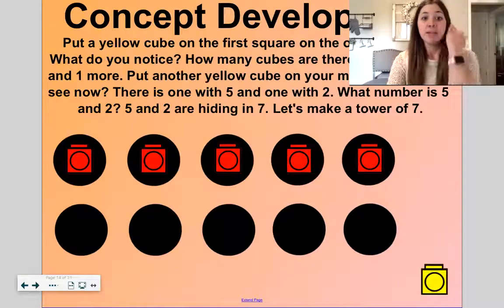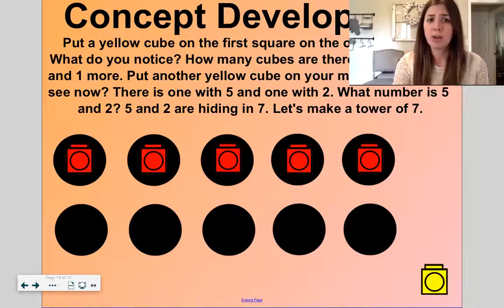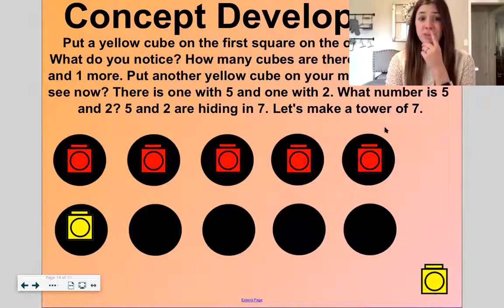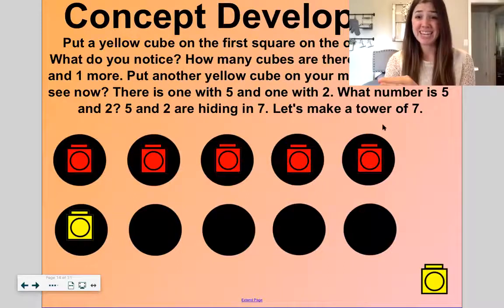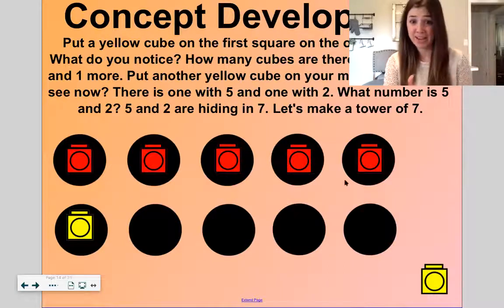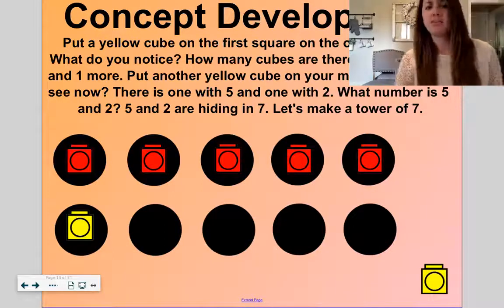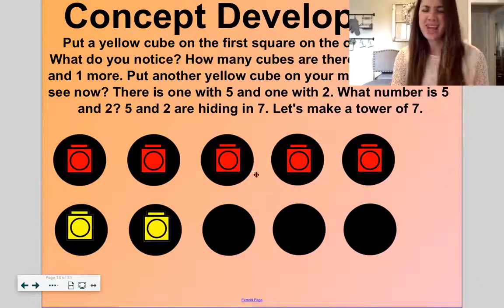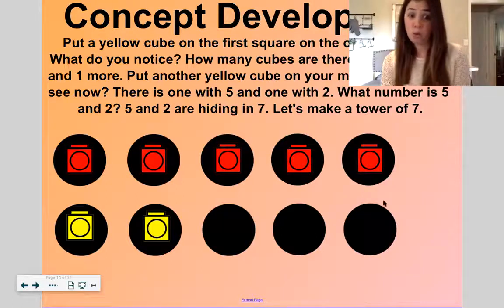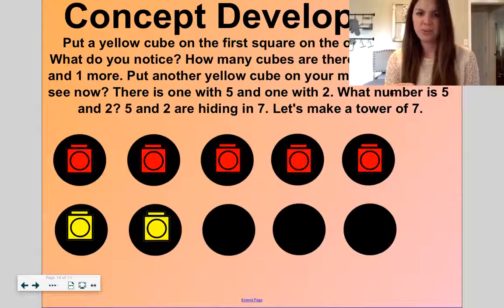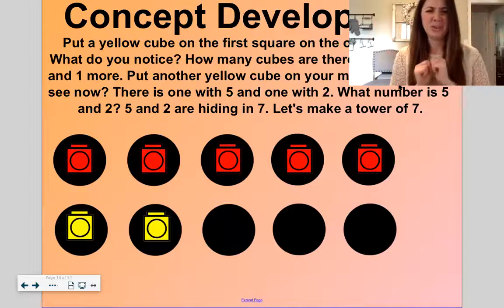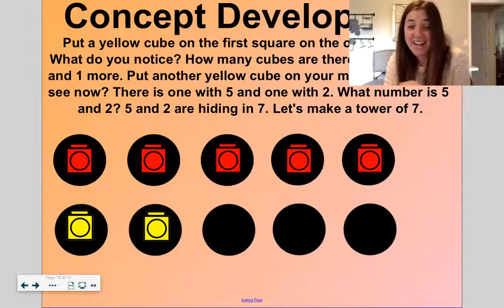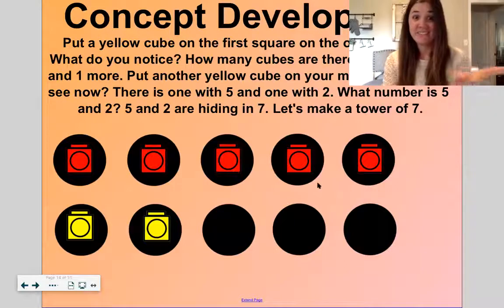Let's move on to the next one. Now, let's put a yellow cube down here on the first square of the bottom. What do you notice? I notice that there are six cubes in all, and six is five and one more. Let's put another yellow cube on the map. Now I notice there's no more left. There's zero left. What do you notice now on the map? There is one row of five and one row of two. What number is five and two? Five and two. Seven. Five and two are hiding inside of seven. Five on top and two more is seven. Five, six, seven.